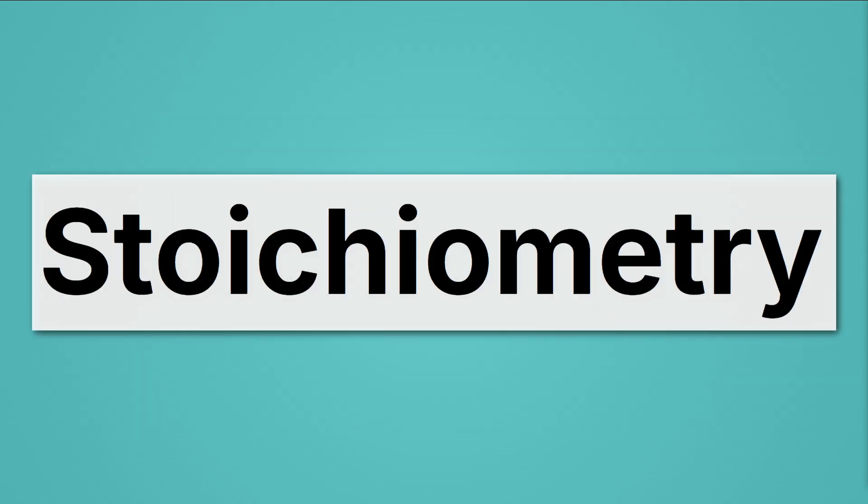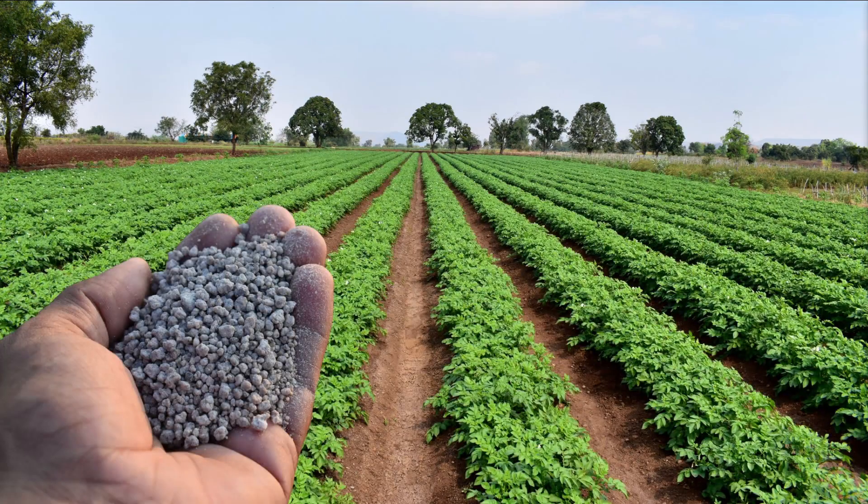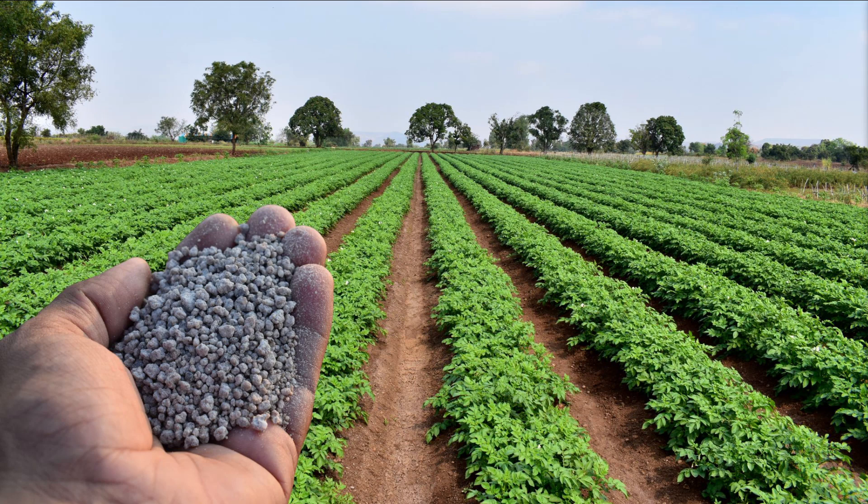Let's start with stoichiometry, which is a big scary word for thinking about chemical recipes, chemical reactions. Here we have a very important chemical reaction. One nitrogen molecule combines with three hydrogen molecules to form two NH3 molecules, which is ammonia, which forms the basis of fertilizer. It's the basis for our modern agricultural system and lets us grow all these crops.